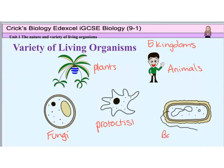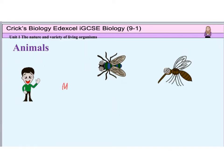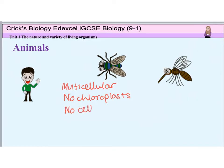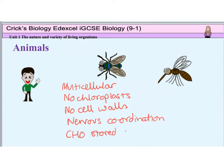Bacteria are prokaryotes. Animals are multicellular organisms. Their cells do not contain chloroplasts, and they are not able to carry out photosynthesis. The cells have no cell walls. They usually have nervous coordination and are able to move from one place to another. They often store carbohydrate as glycogen — we store glycogen in our liver and muscles. Examples of animals include mammals such as us, and insects such as the housefly and the mosquito.